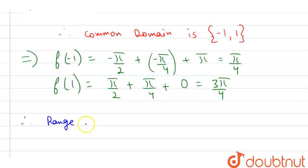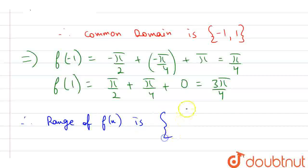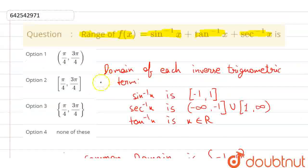So the range of f(x) is pi by 4 to 3 pi by 4. The third option is correct.